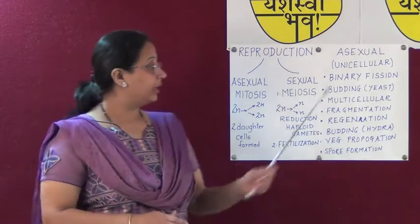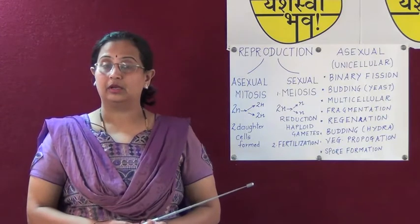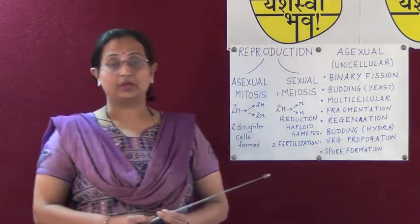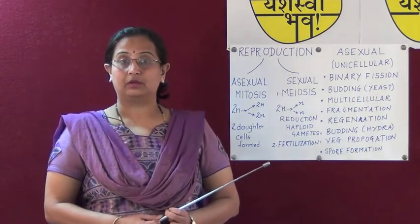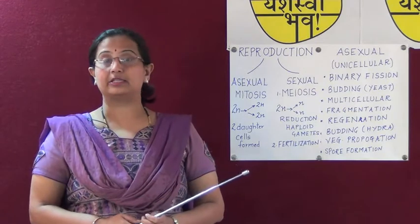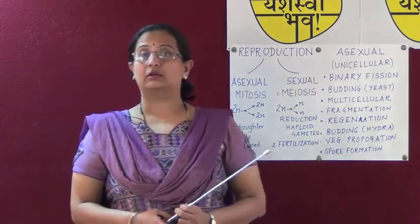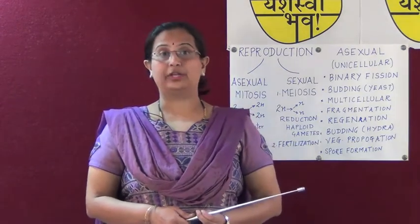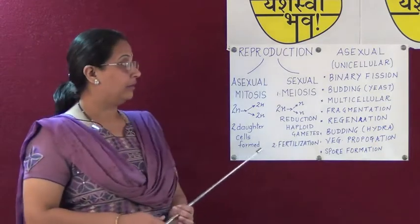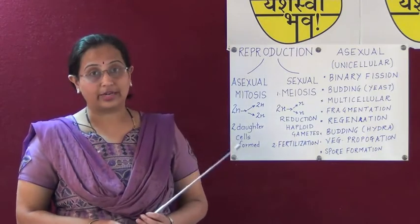In the case of yeast, budding is a method of asexual reproduction. A bud — that is, an outgrowth — is formed in the yeast. The nucleus slowly and steadily divides and migrates into the bud, which grows gradually and forms the new body. This is called budding in yeast.